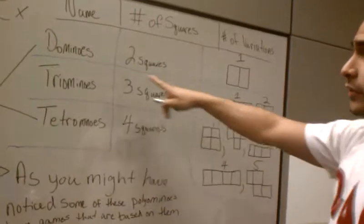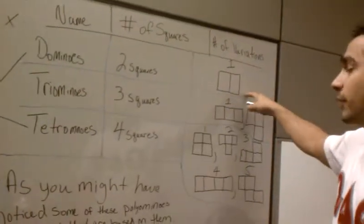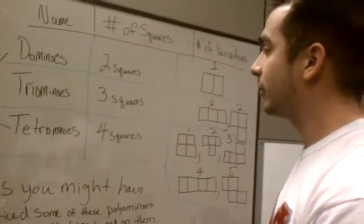If you look closely at the dominoes, of course, the name sounds familiar because it comes from the little game. It's made of two little squares put side by side. They just have different numbers on them.